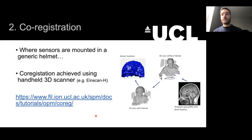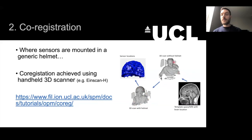There is added complication where you're using a generic helmet — the co-registration would be slightly more complicated. What some labs are doing is using a handheld 3D scanner to capture sensor locations, scanning the person wearing the helmet, scanning the person without the helmet, and combining that with the MRI to align all the different sources of information together. There is a tutorial about how to do this with the Circa MEG data on the SPM website.